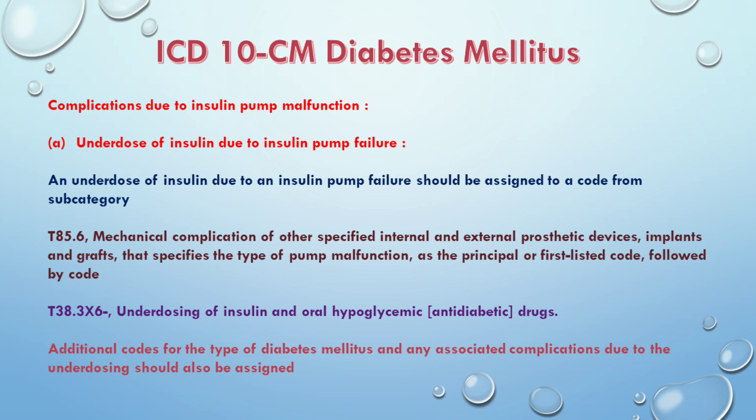In the case of underdose of insulin, the insulin produced by the insulin pump is insufficient due to pump malfunction. An underdose of insulin code from insulin pump failure should be assigned a code from subcategory T85.6 — Mechanical complication of specified internal and external prosthetic devices, implants and grafts — specifying the type of pump malfunction as the primary diagnosis.